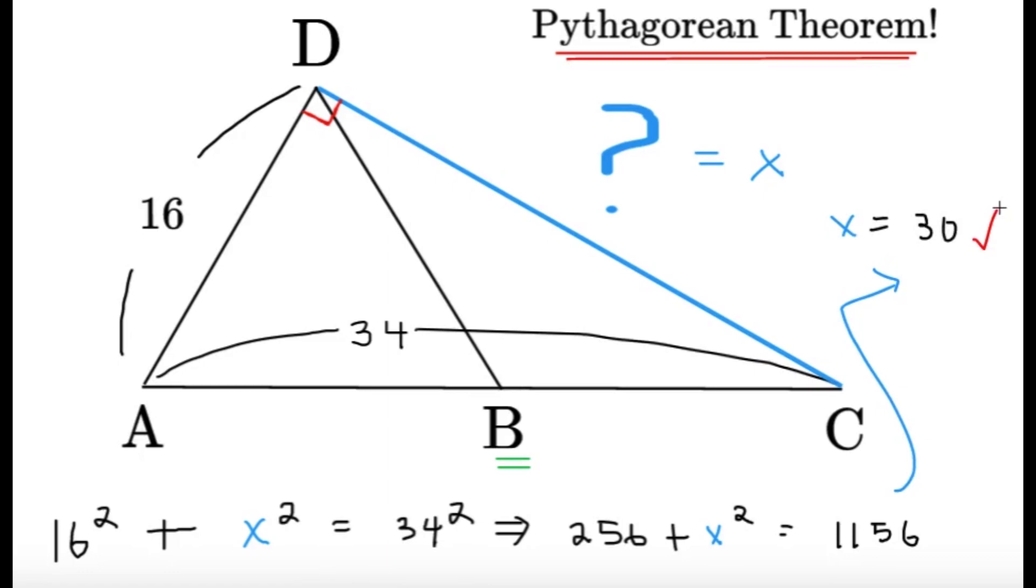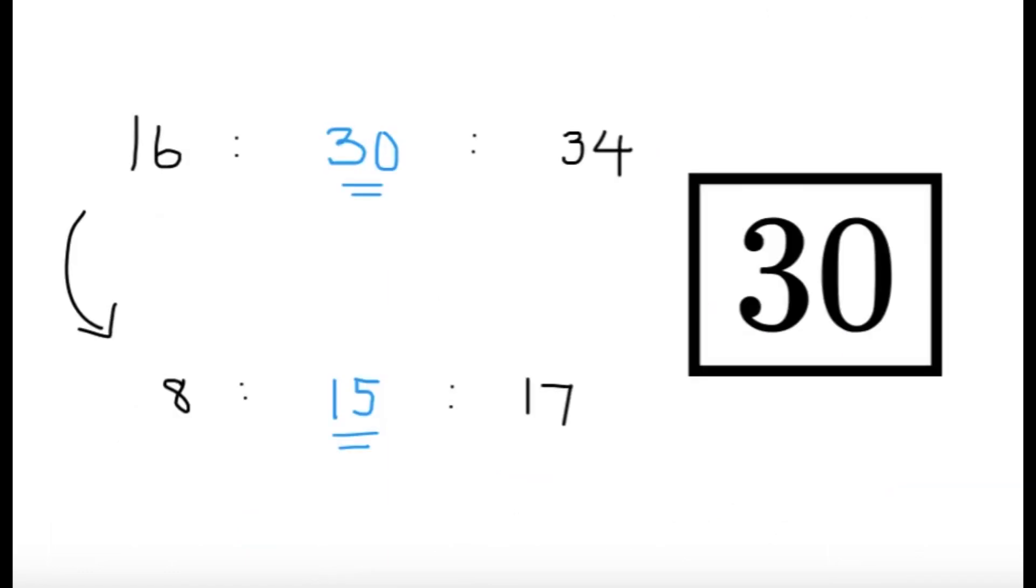Now, some of you guys may try to do this differently and maybe want to take a look at the ratios and see that, okay, 16 and 34, they have, I mean, if I simplify the ratio, it's going to be 8 and 17. And we have a famous Pythagorean triple of 8, 15, 17. So this 30 over here should correspond to the 15. So either way, if you're trying to use the ratio or the Pythagorean theorem, we're going to end up that the missing side length of CD is equal to 30. And this will be our final answer.